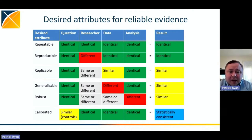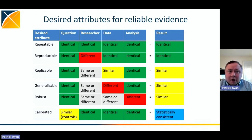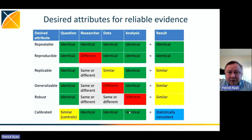These attributes of reliable evidence — repeatability, reproducibility, replicability, generalizability, robustness, and calibration — are attributes that most observational studies fall far short of. It's no wonder why evidence generated from observational data is seen with tremendous scrutiny and skepticism if we can't actually prove that the evidence we generated is reliable. We've been thinking a lot in the OHDSI community about how to make evidence reliable and how to prove that evidence is indeed trustworthy.